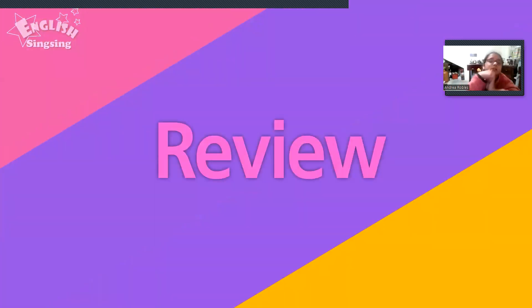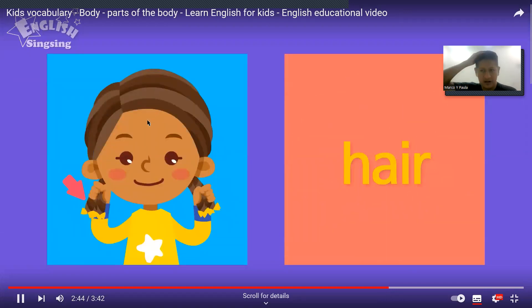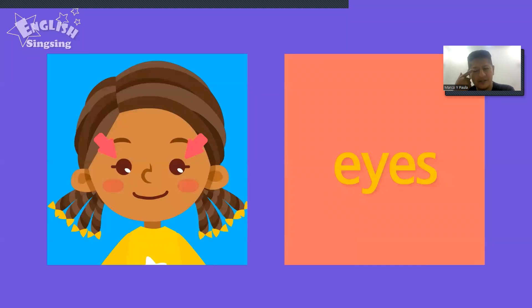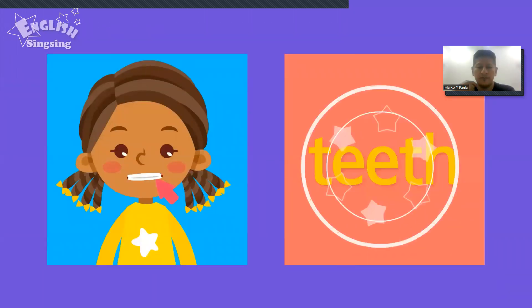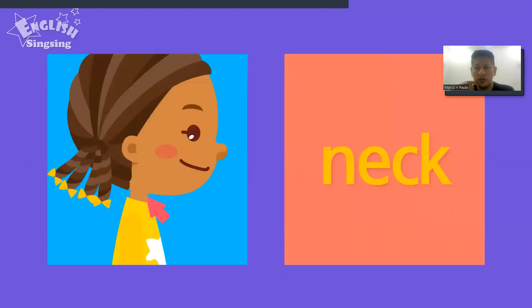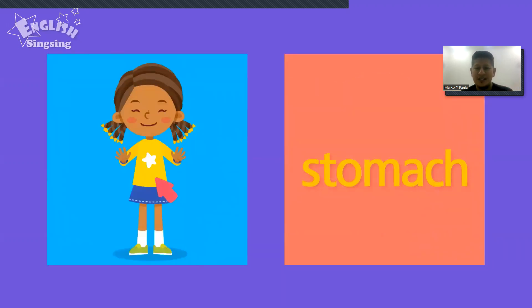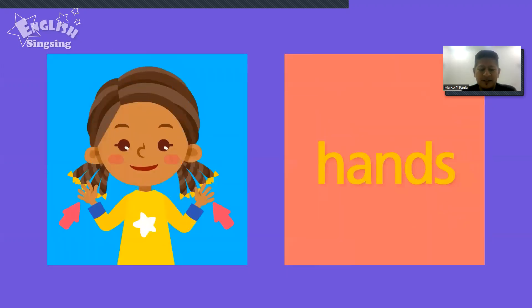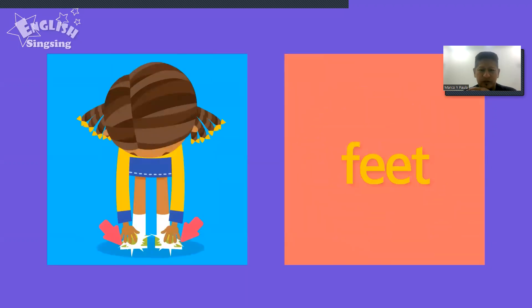Review: Hair. Ears. Eyes. Nose. Mouth. Teeth. Tongue. Neck. Shoulders. Stomach. Hips. Arms. Hands. Legs. Feet.